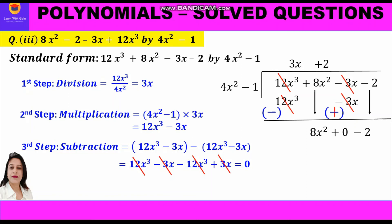So 2 is written on top next to 3x. Alternatively, using the first step — division: 8x² divided by 4x² is 2. Now the second step, multiplication: 4x² minus 1 into 2 gives 8x² minus 2.